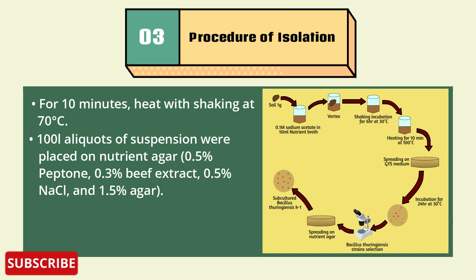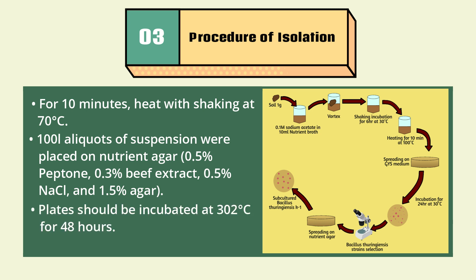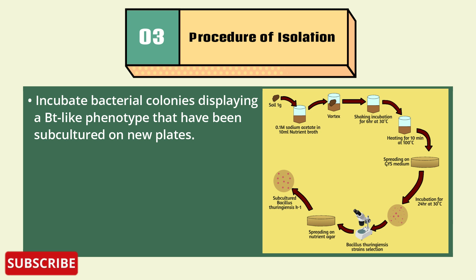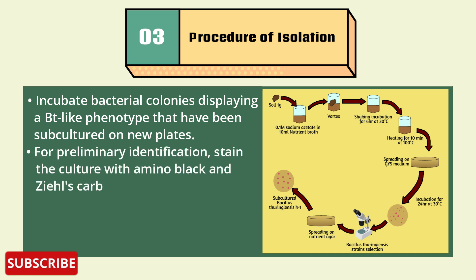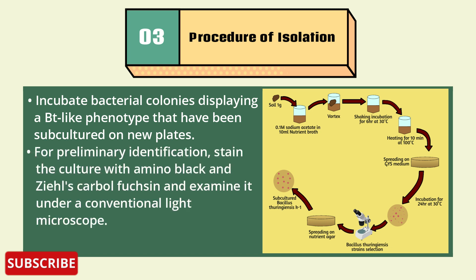100 microliter aliquots of suspensions are plated on nutrient agar (0.5% peptone, 0.3% beef extract, 0.5% NaCl, and 1.5% agar). Petri plates are then incubated at 30°C or 37°C for 48 hours. Bacterial colonies displaying a Bt-like phenotype are subcultured on new plates for primary identification; stain the culture with amido black and Ziehl–Carbol fuchsin and examine it under a conventional light microscope.